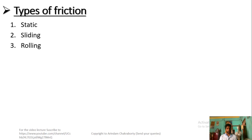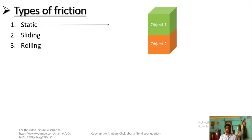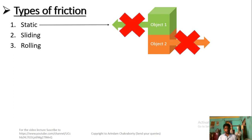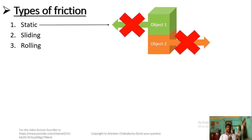Static friction occurs when object 1 and object 2 are placed on each other with no motion. One important note: if there were no friction, the body would slide because the surfaces would be smooth and objects would not stay on each other. That means even a static body has friction acting on it.